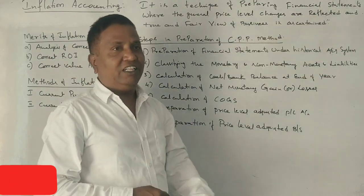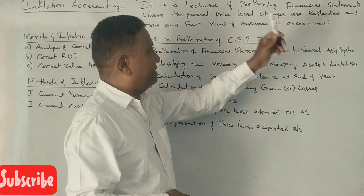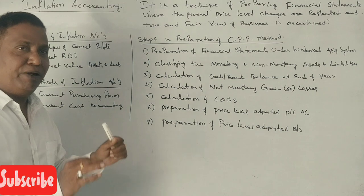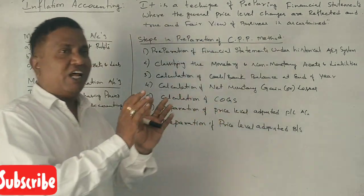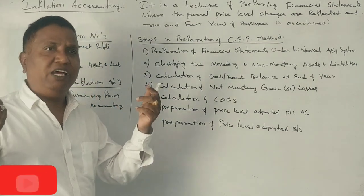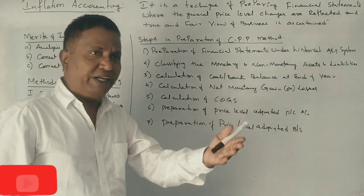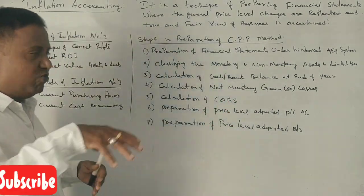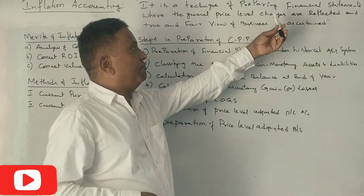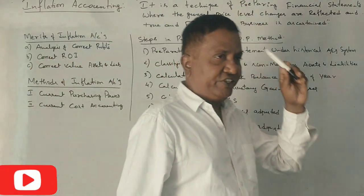So that through price level-adjusted financial statements, a true or fair view of the business can be ascertained. Financial statements — profit and loss account or balance sheet — are presented by the business for all stakeholders: shareholders, management, and government, who will also have access to this information. This is the meaning or definition of inflation accounting.